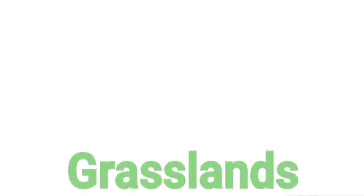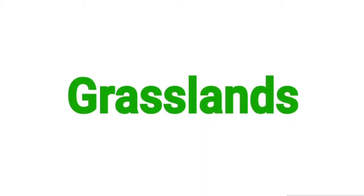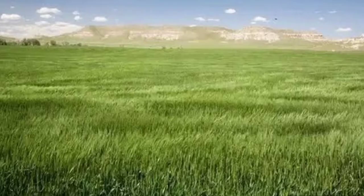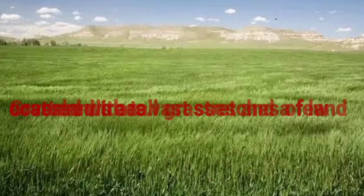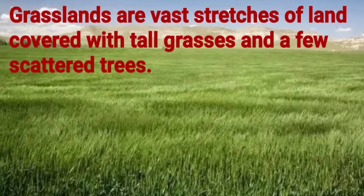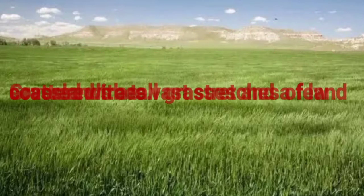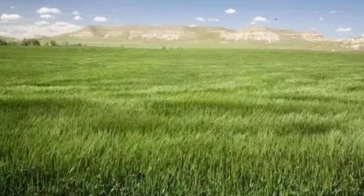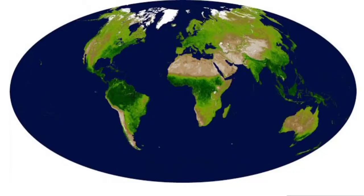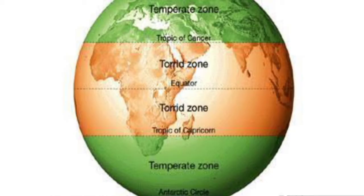Grasslands are vast stretches of land covered with tall grasses and a few scattered trees. Nearly one-fifth of the earth's land surface is covered with grasslands, and these are generally seen in the temperate zone.